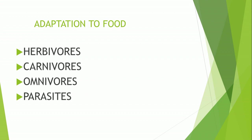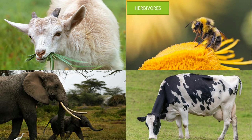Now comes adaptation to food. Animals adapt themselves to food according to their body structure and also to what food is available. Depending on the food they eat, they are of different kinds: herbivores, carnivores, omnivores, and parasites. Animals which eat plants are herbivores, such as cow, horse, elephant, and goats. These have sharp cutting teeth and strong grinding teeth for chewing plants. Many birds and insects like honey bee, butterfly, and hen are also plant eaters.